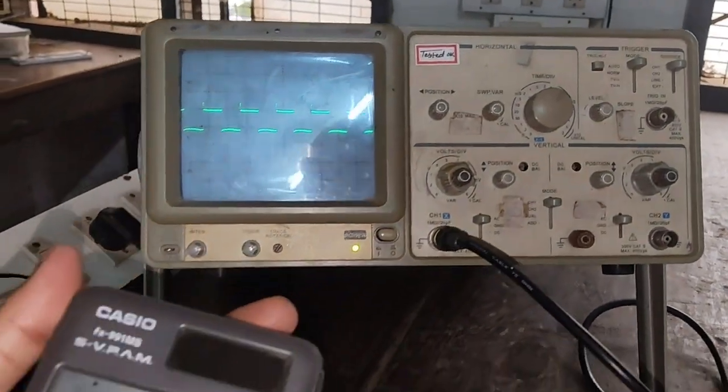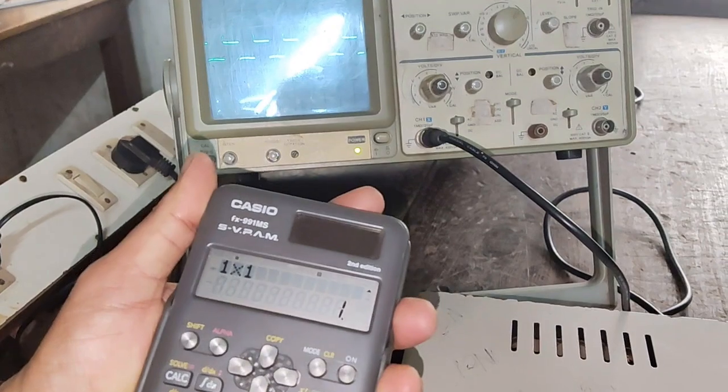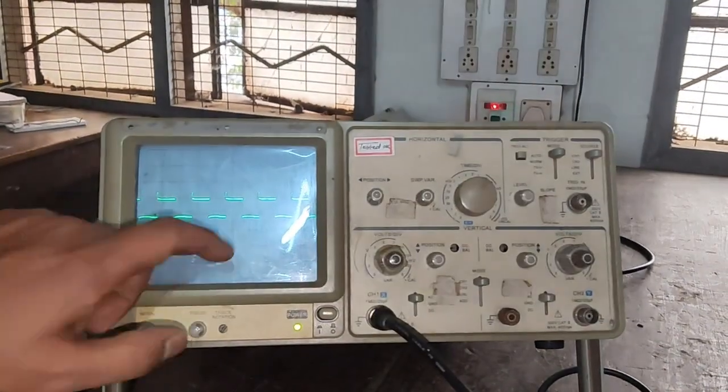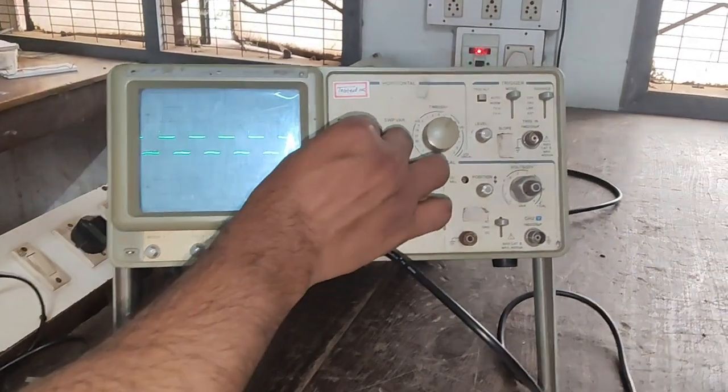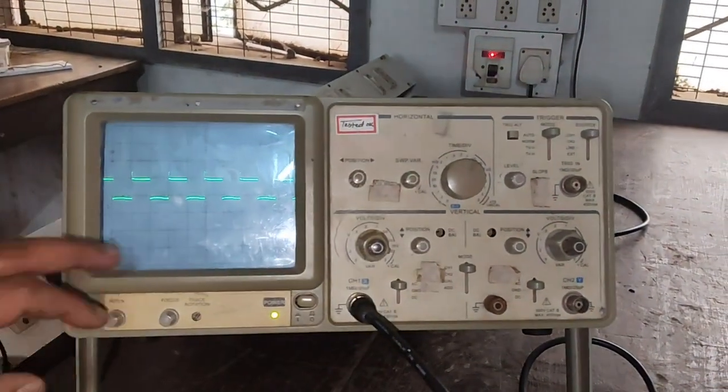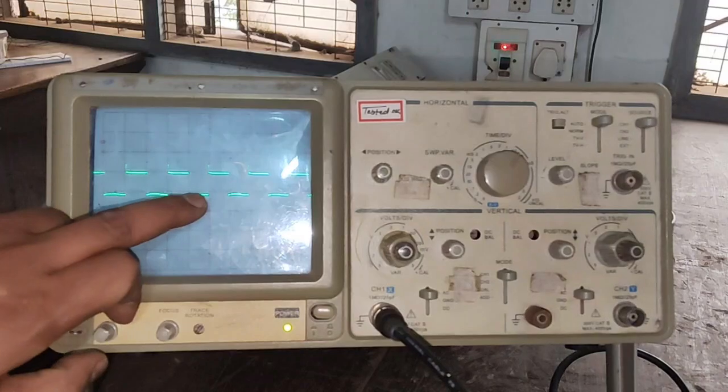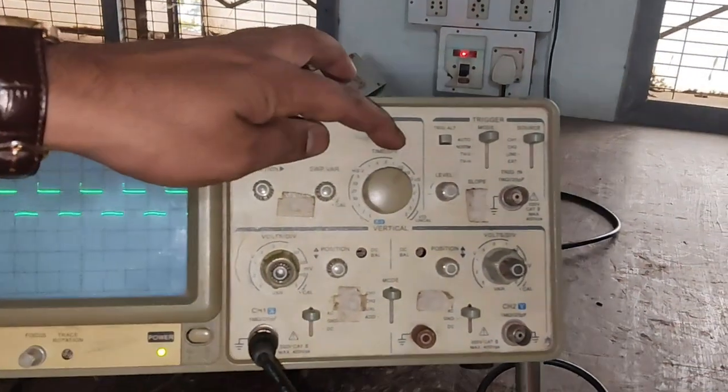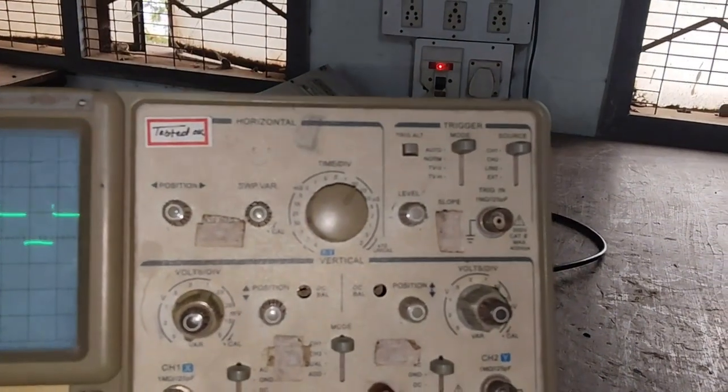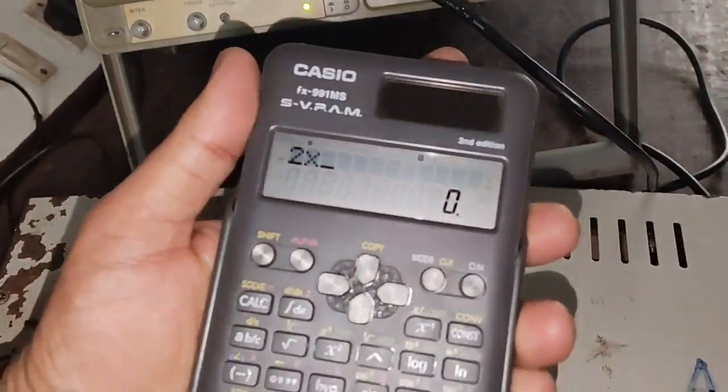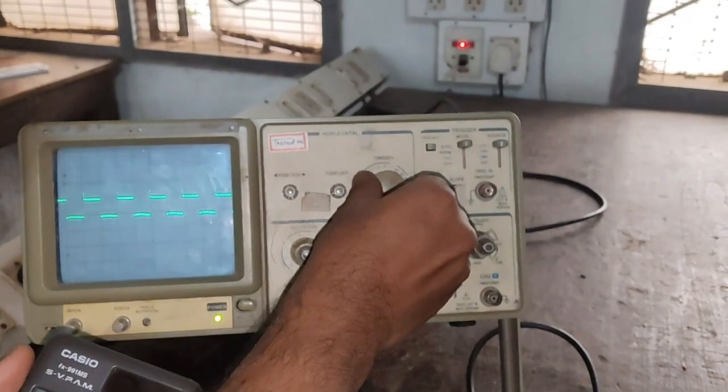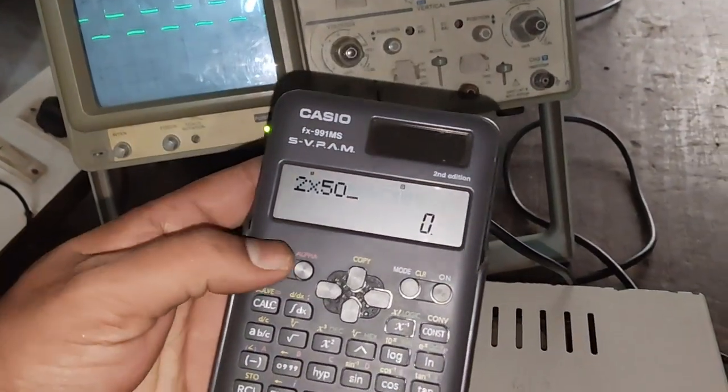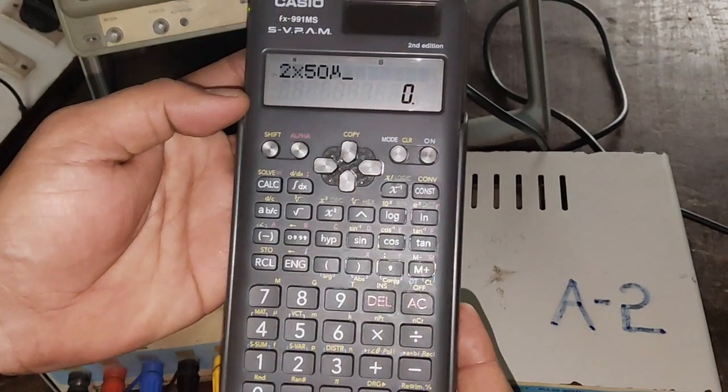That is total input voltage is 1 volt. And its frequency is, we have to measure the T on as well as T off width. Here we can see that it is having 2 divisions. From here 1 and 2. 2 into we have to multiply this time division. That is 2 into the total time division here is 50 microsecond.